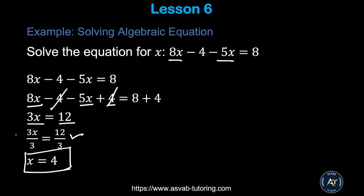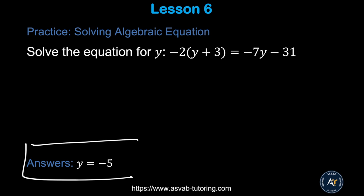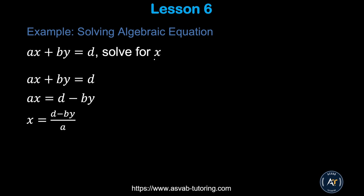Let's do another problem. Solve: −2(y + 3) = −7y − 31. Use the same approach from previous examples, apply the steps, and make sure you get the correct answer. Pause the video and try by yourself.